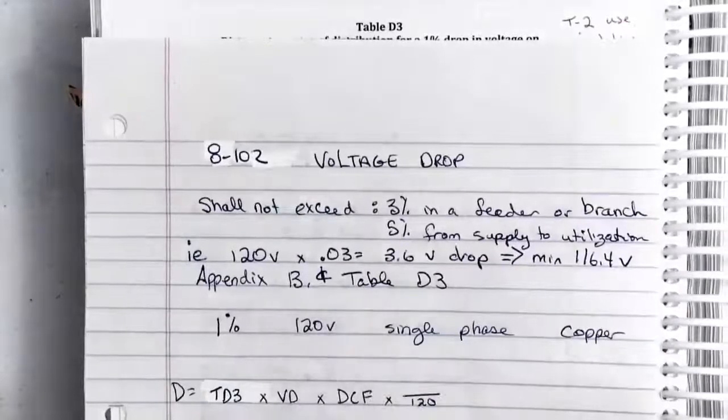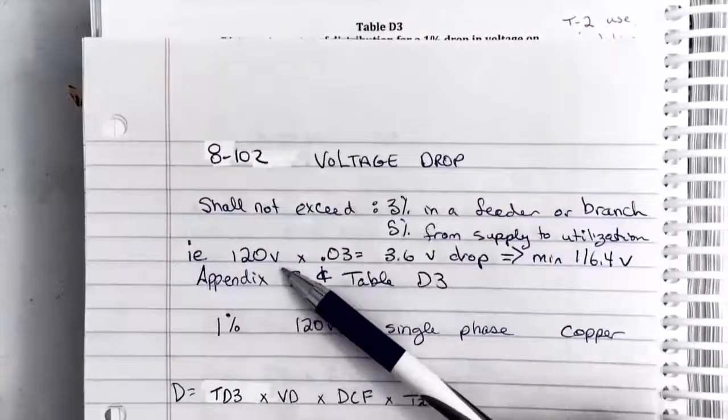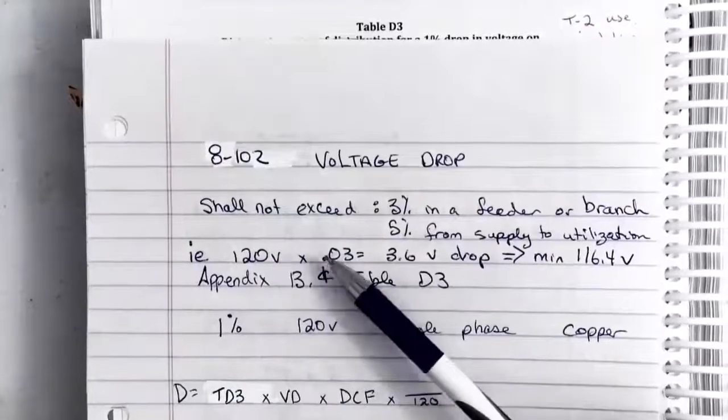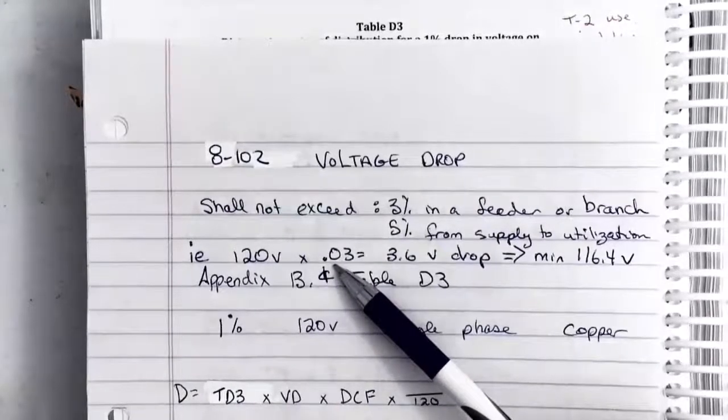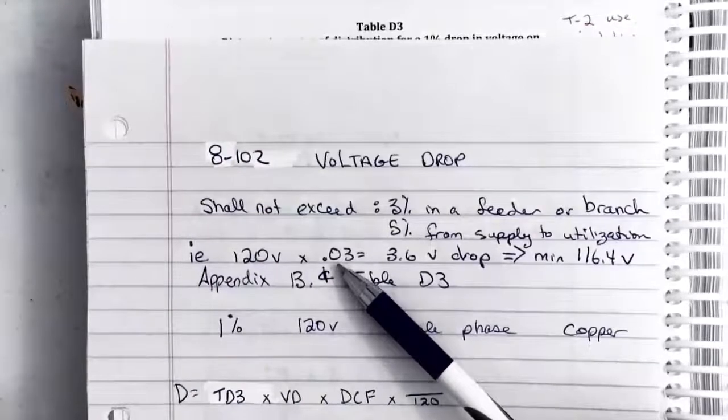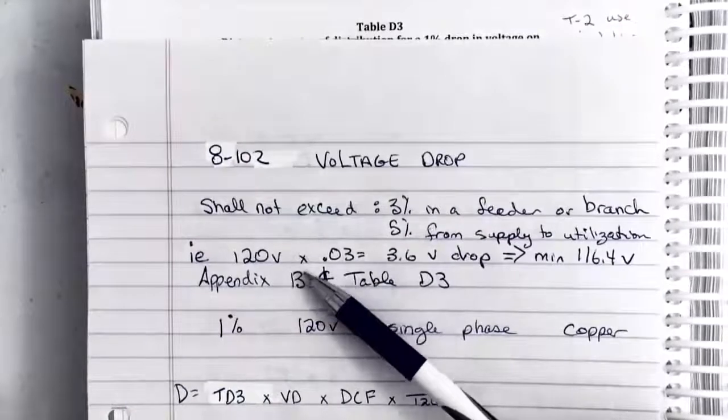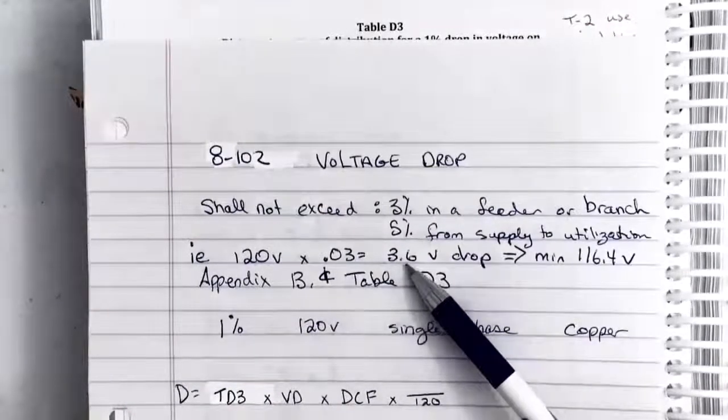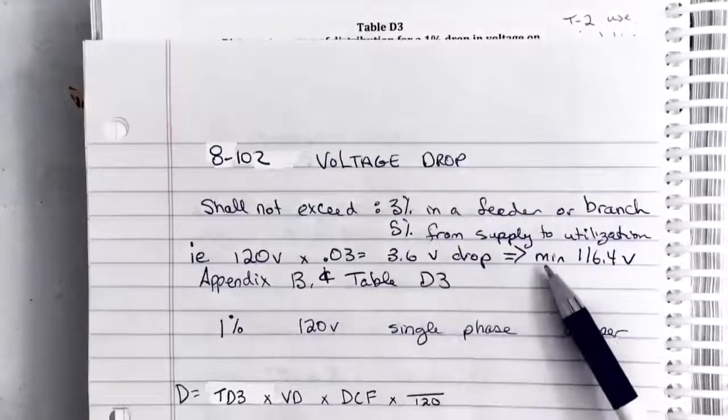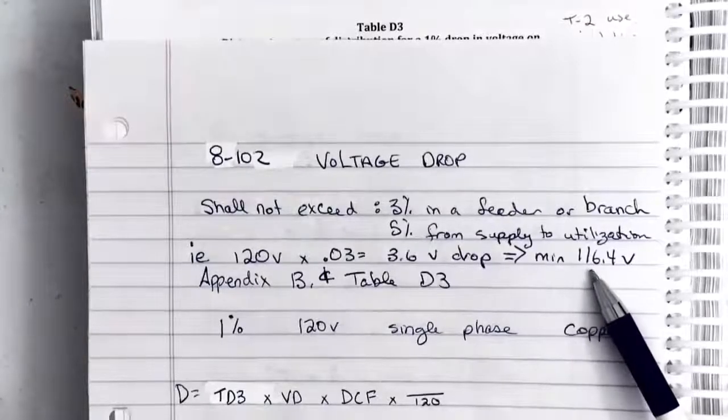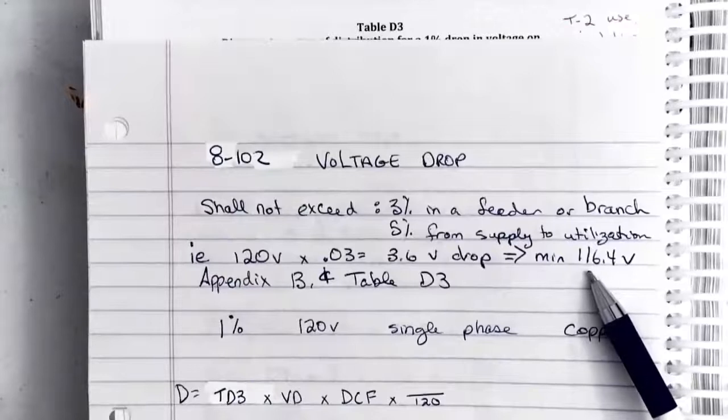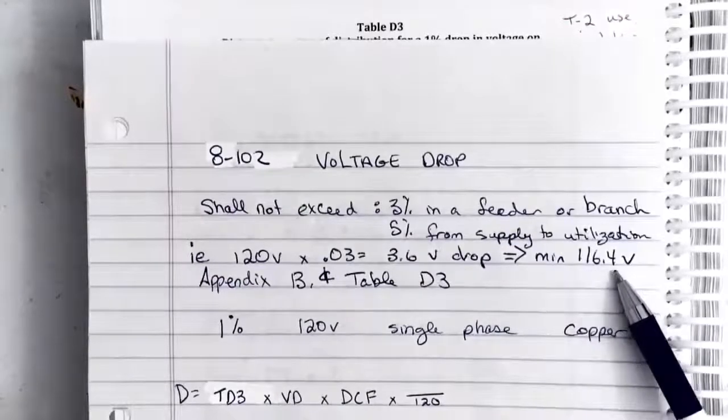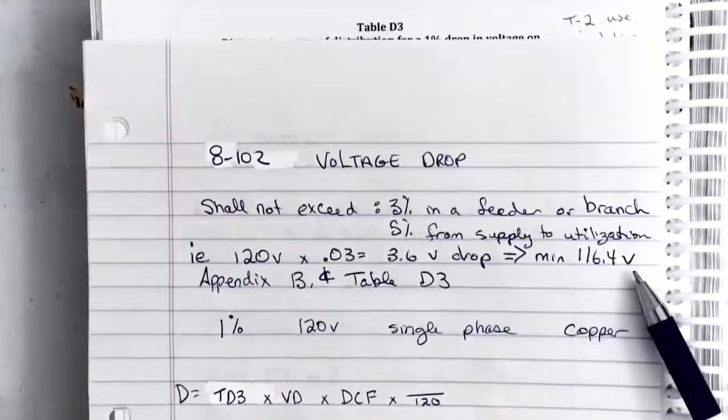What does that exactly mean? Well, let's say we had a 120 volt supply. The maximum amount of voltage that we would be able to drop in the lines getting out to the load would be 3%. So 120 times 0.03 gives me a maximum of 3.6 volts drop. That means at the load we would end up getting a minimum of 116.4 volts supplied to the load.